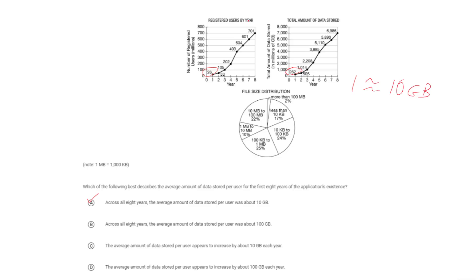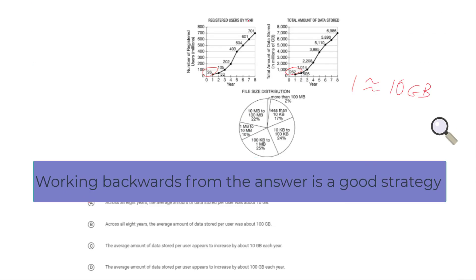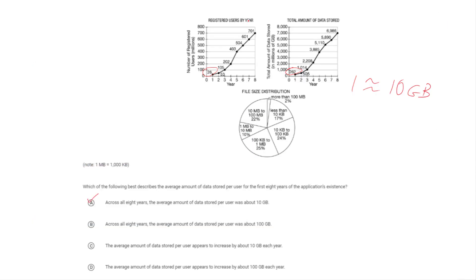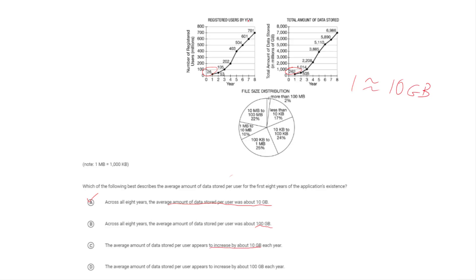If you're not sure what inference to make, work backwards: look at all the answers and see whether you can support any of them from the data. Answer B says 100 gigabytes per user, but the data doesn't show that the number on the left is one-hundredth of the number on the right. Answers C and D suggest the data per user increases by 10 gigabytes each year, but actually it's pretty much static — the ratio of data to users stays consistently around 10 across the entire period.